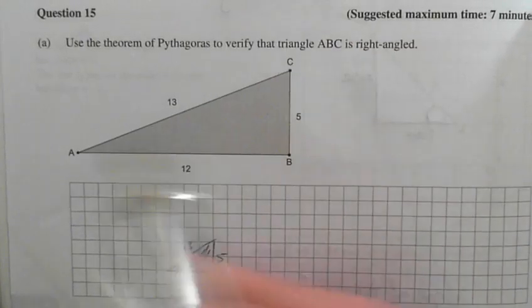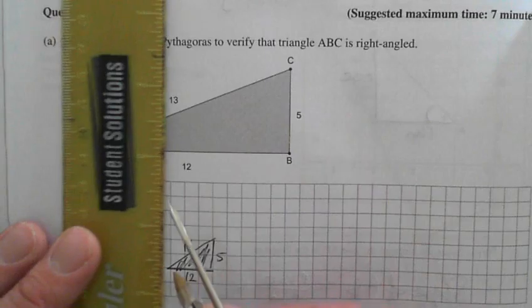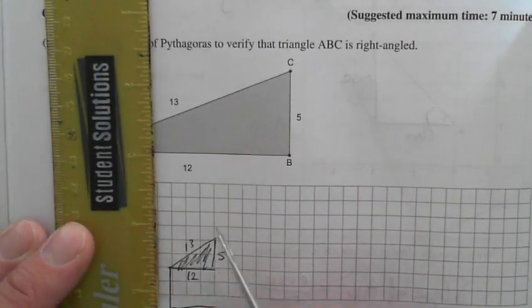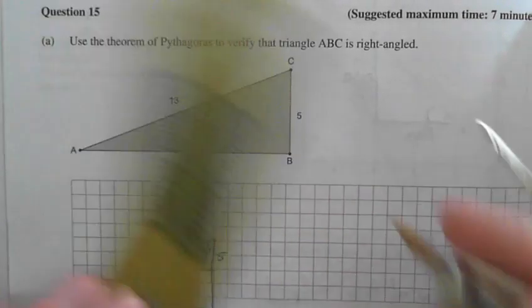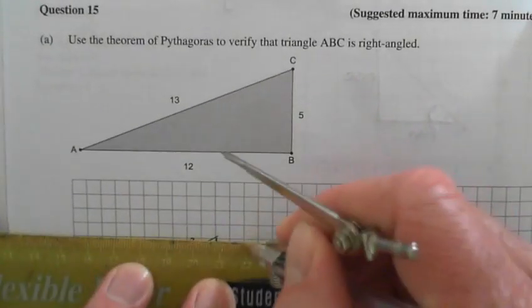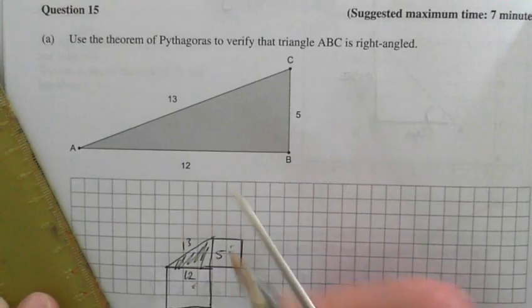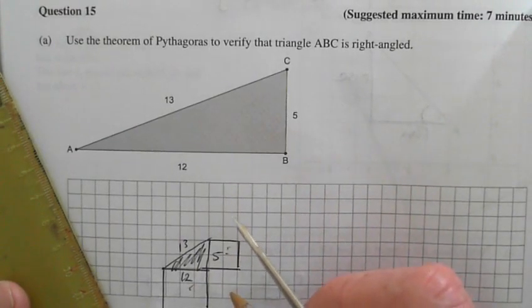Looking up, use Pythagoras' theorem to verify, to check that ABC is a right-angle triangle. So what we want to do is prove that it is a right-angle triangle. These two squares, if I add the area of these two squares, it should be the same as the area of the hypotenuse field square.